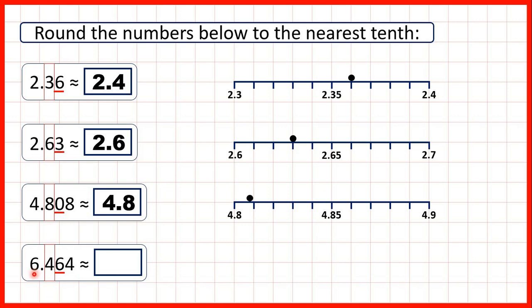Digits to the left stay the same so we have 6.5 because if we're rounding to the nearest tenth we don't write any digits after the tenths digit so we only have one decimal place in our answer.